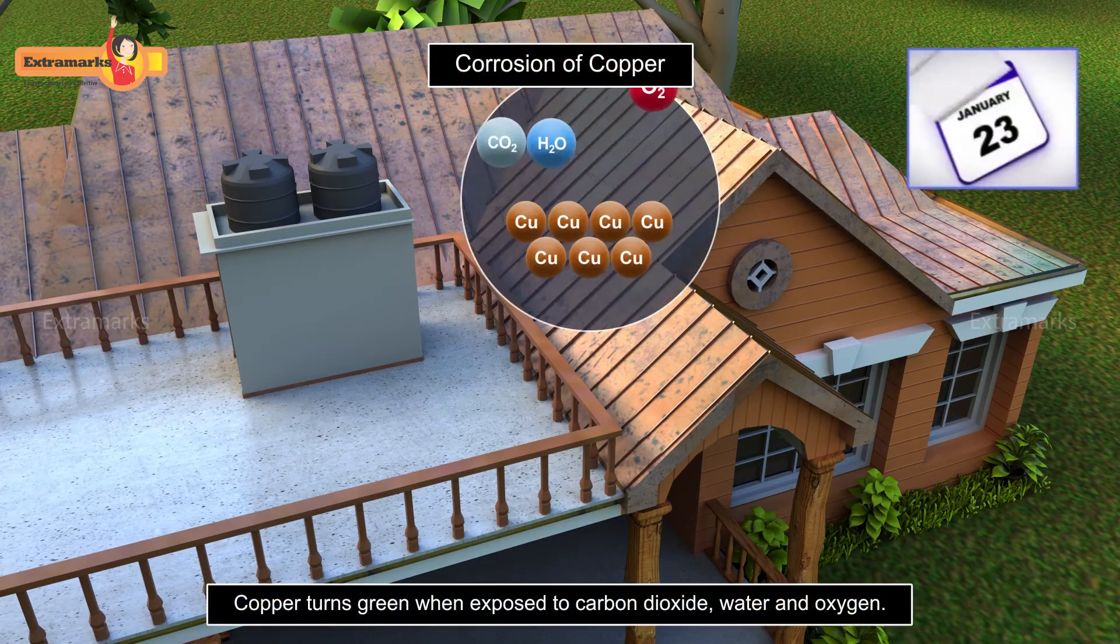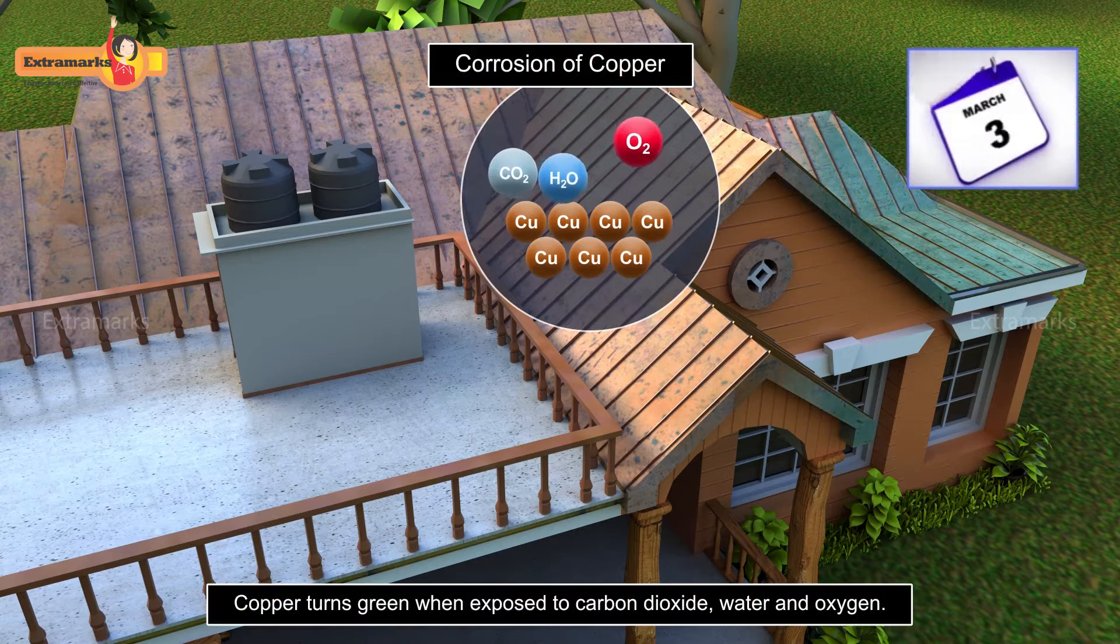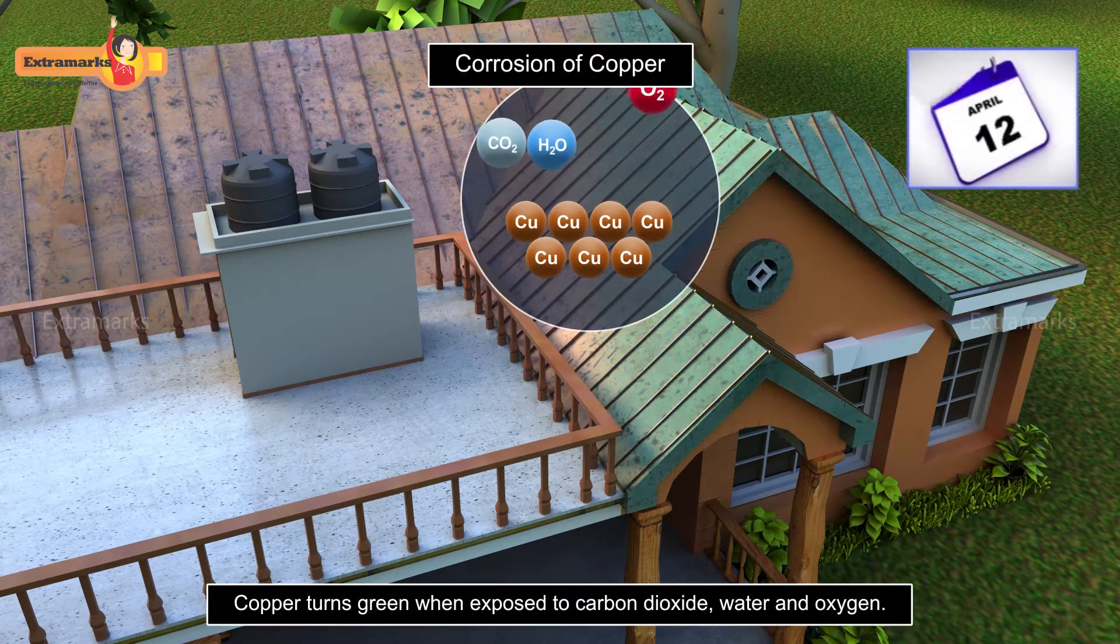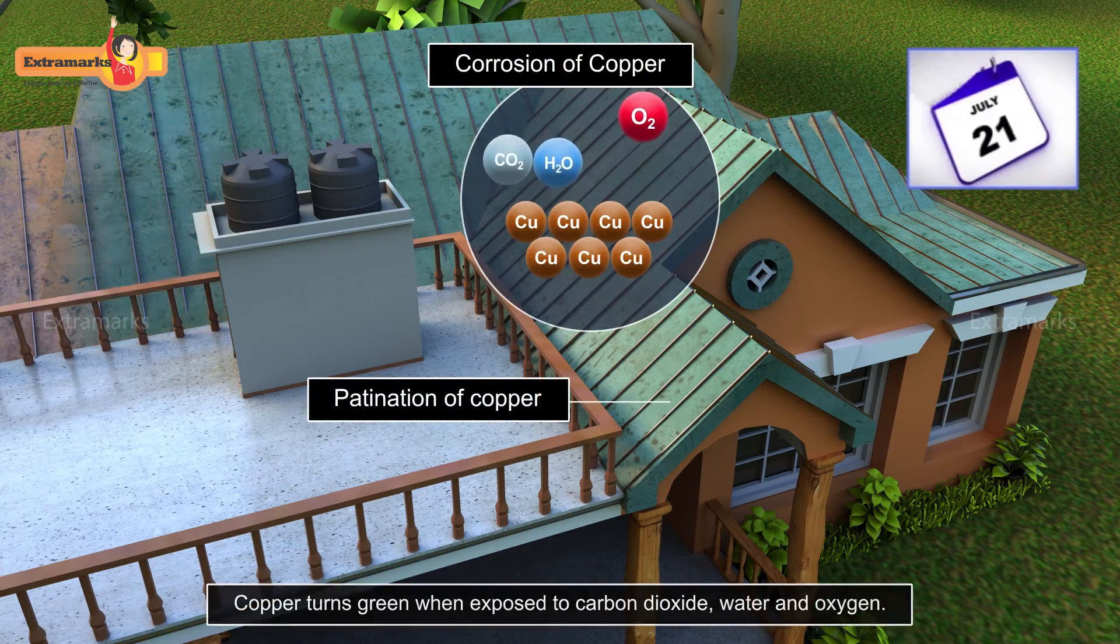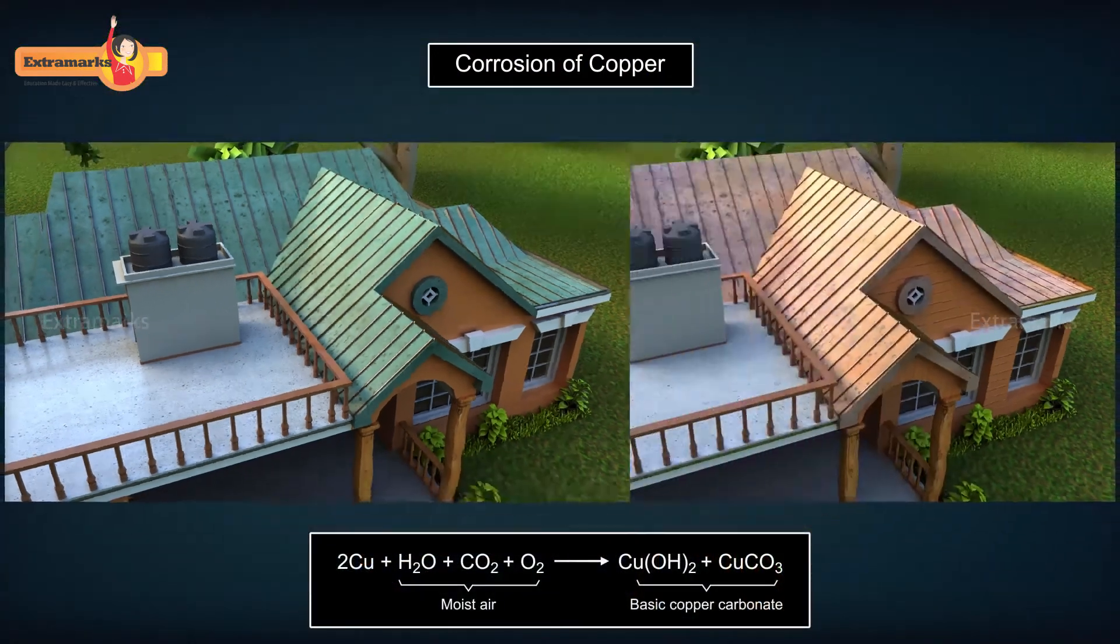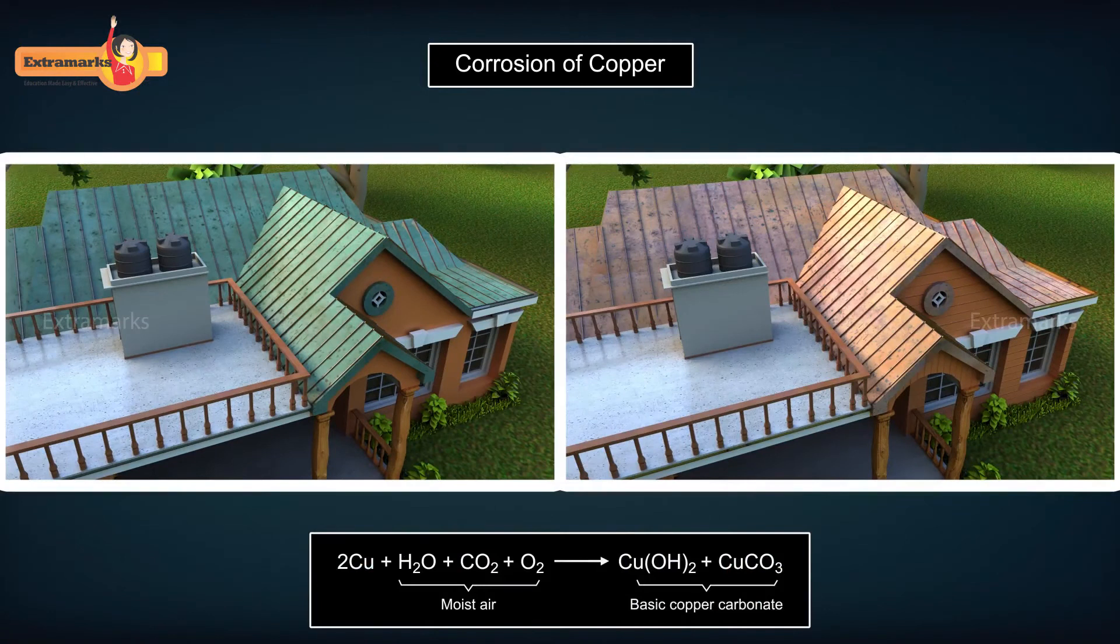Green color deposits are seen on copper roofs or copper metal tubes when exposed to carbon dioxide and water present in the air. This is called patination of copper. These deposits are of basic copper carbonate, which is formed by the reaction of copper with carbon dioxide and water present in the air.